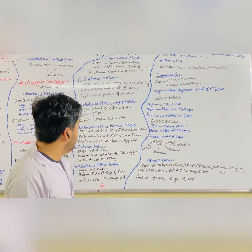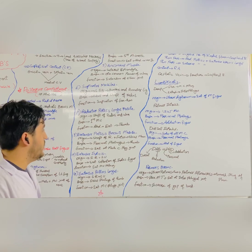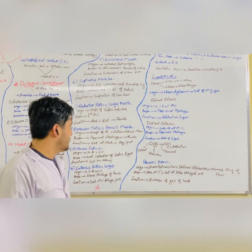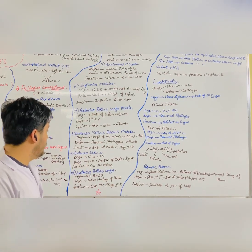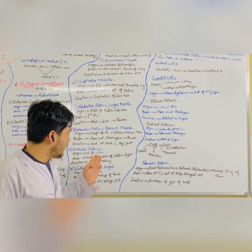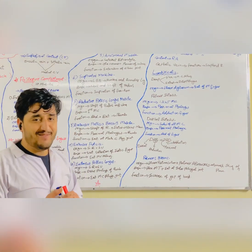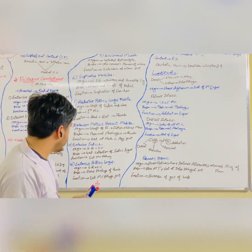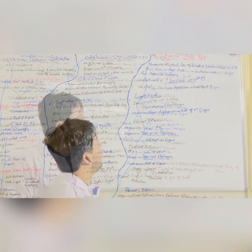The extensor pollicis brevis originates from the shaft of the radius and interosseous membrane. Its insertion is the proximal phalanx of the thumb, and its function is extension at the metacarpophalangeal joint of the thumb. The extensor indicis originates from the shaft of the radius and ulna, and its insertion is the extensor expansion of the index finger. Its function is extension of the index finger. The extensor pollicis longus originates from the shaft of the ulna and radius, and its insertion is the distal phalanx of the thumb.